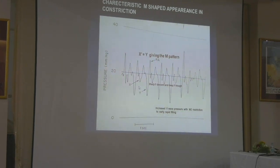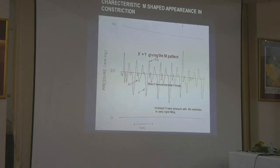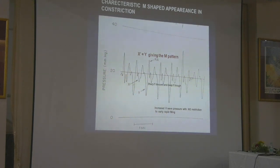If you have a typical M pattern described in constrictive pericarditis, it gives both a prominent X' descent and Y' descent. This M pattern comes in the right atrial waveform mainly because of the very prominent Y' descent, which is very steep and the trough is very low. You can see the right atrium mean pressure is elevated to 20 mmHg in constrictive pericarditis. All the diastolic pressures — LV, RV, right atrium, and left atrium — are all equally elevated, and you have the classical M pattern mainly because of the prominent, deep and rapid Y' descent.